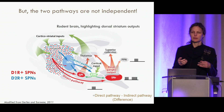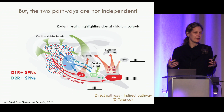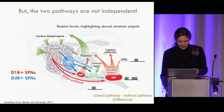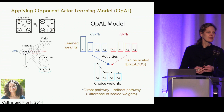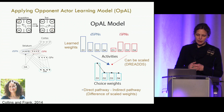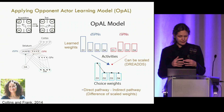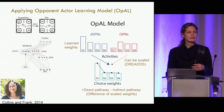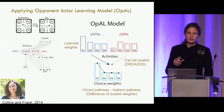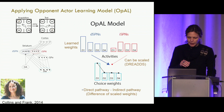Critically, the OPAL model predicts that inhibiting D2 spiny projection neurons has no effect on choice, while exciting them brings all the activity up and flattens the difference between all choices — making choice more stochastic. The pointer here shows inhibition of D2 neurons where we're turning down these cells using chemogenetics, and it has no effect on choice. Interestingly, if we excite the D2 spiny projection neurons, all the activity comes up, swamping the signal, and we get a flatter difference between all choices — so choice becomes more stochastic.